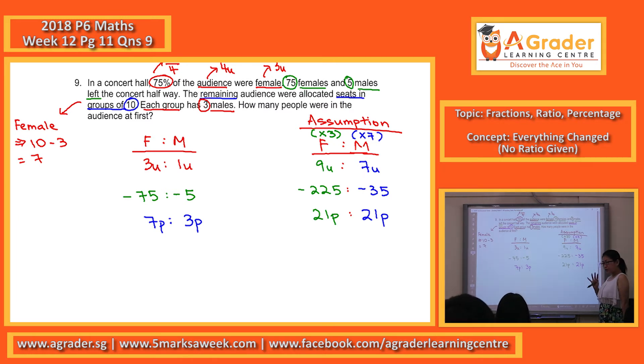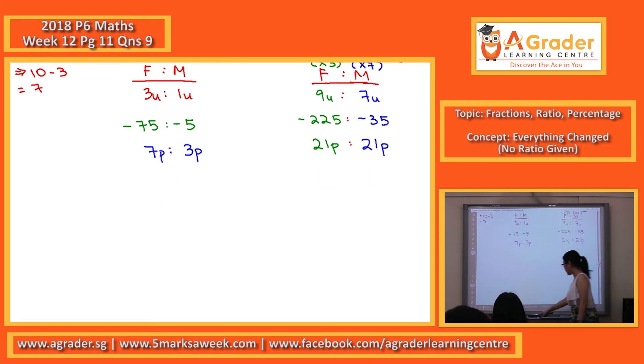So it's the same as the previous two questions that we have done. 9U minus 225, you are left with the 21P. Over this side, 7U minus 35, you are left with the 21P. So basically, this 9U minus 225 is the same as 7U minus 35.